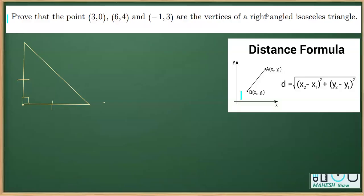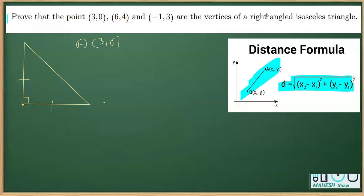We are going to apply the distance formula first of all to figure out, or to prove, that two of its sides are equal. Let's name these points: A whose coordinate is (3, 0), point B whose coordinate is (6, 4), and for C the coordinate is (-1, 3), as given. Now first I'll find AB using the distance formula.